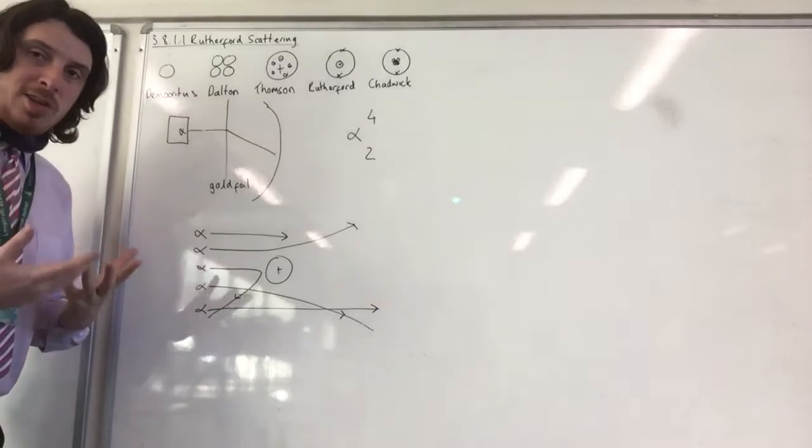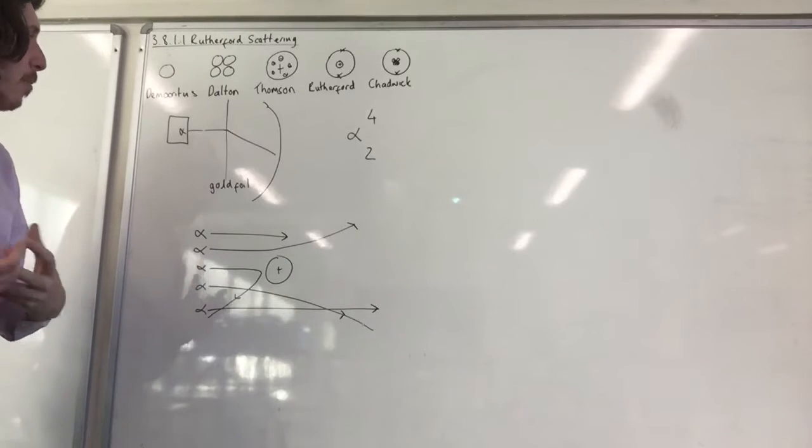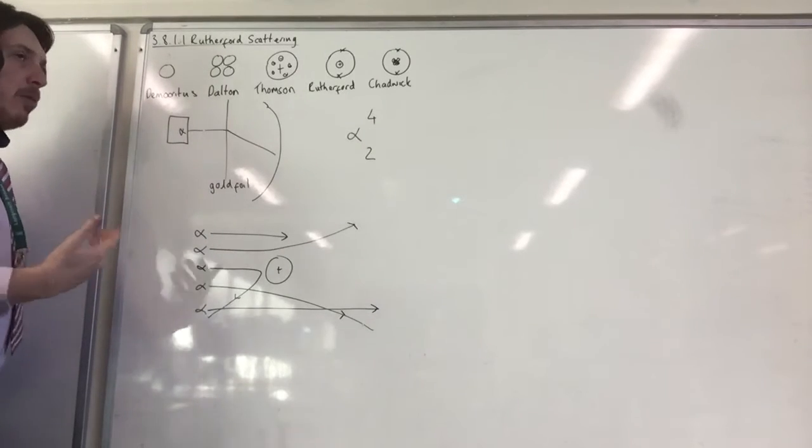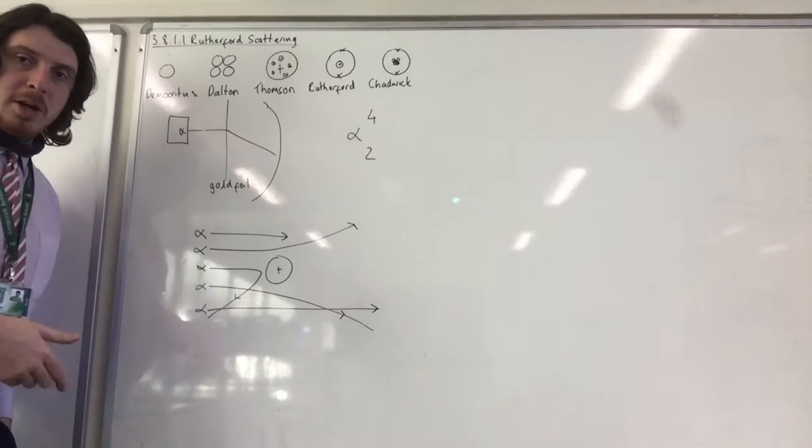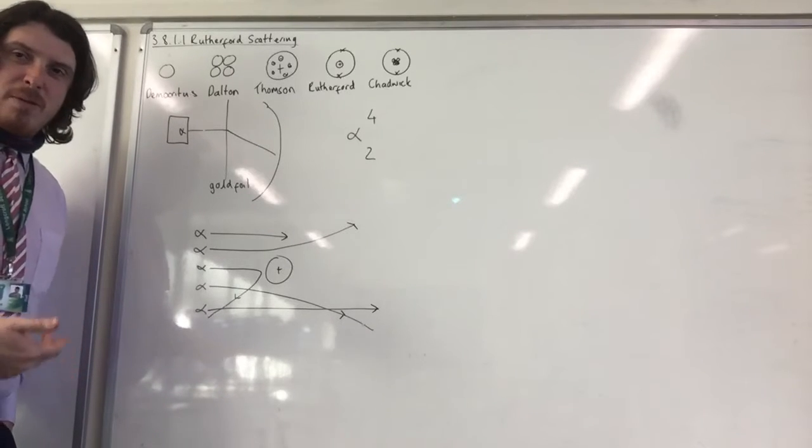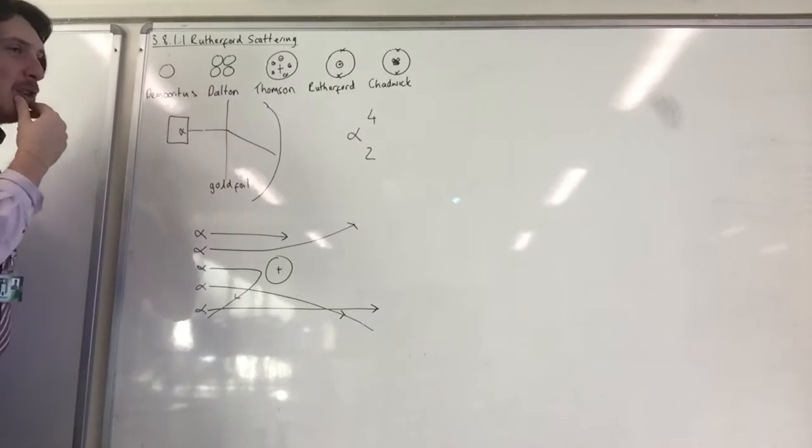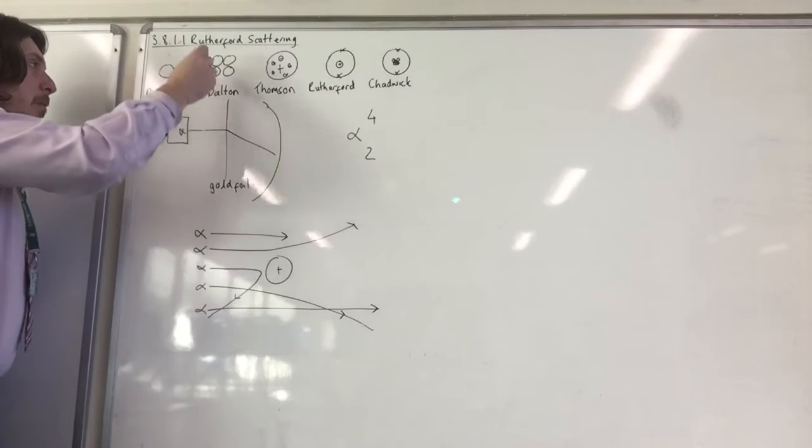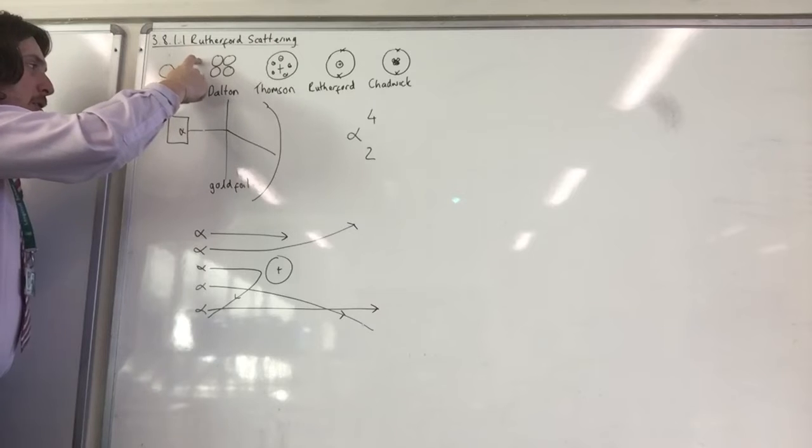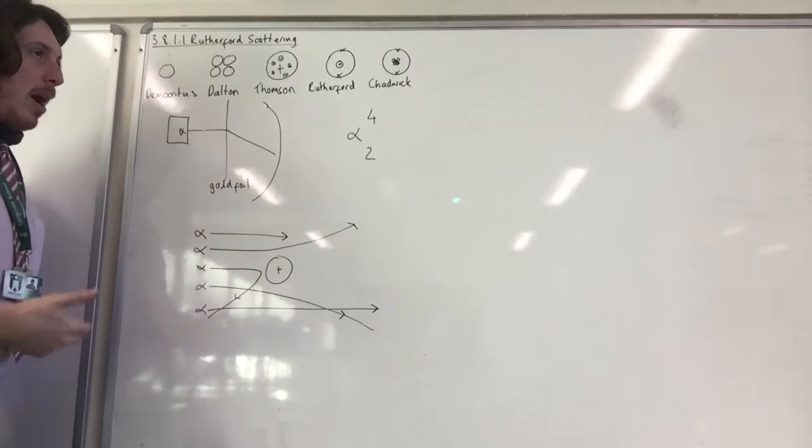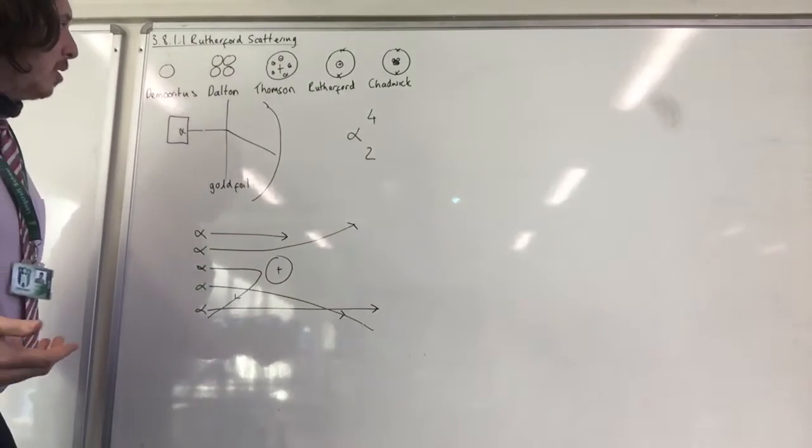Okay, so in terms of the history of the nuclear model, Democritus BC came up with the idea of atoms, atoms being made from stuff. Dalton, in the 19th century at the start, concurred with Democritus and talked about how elements are made from things called atoms.